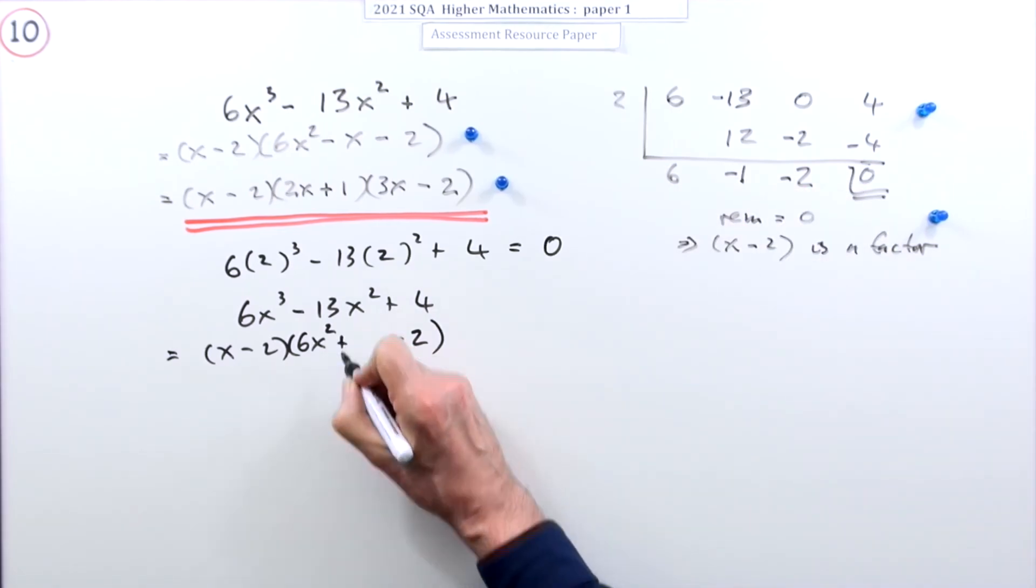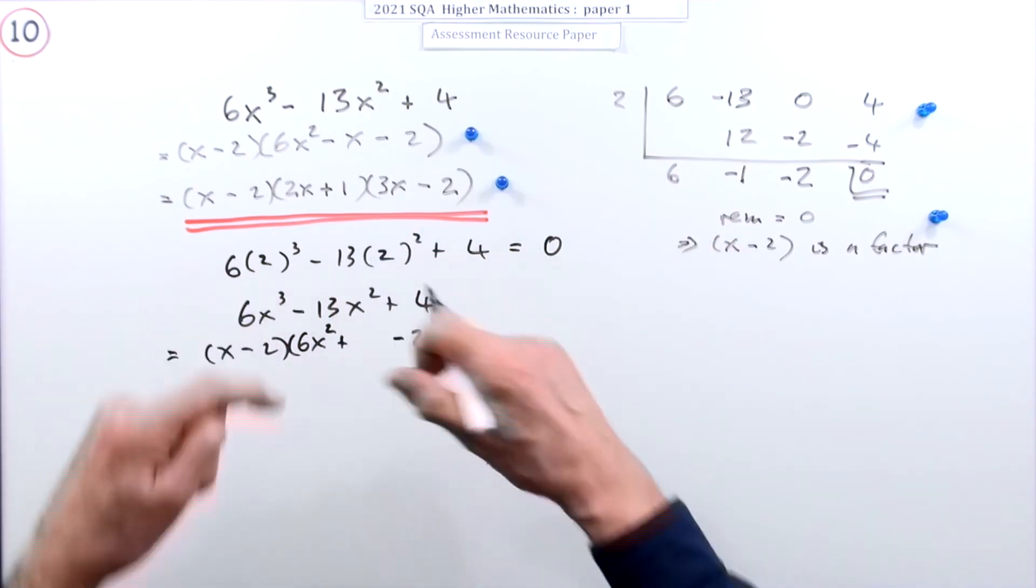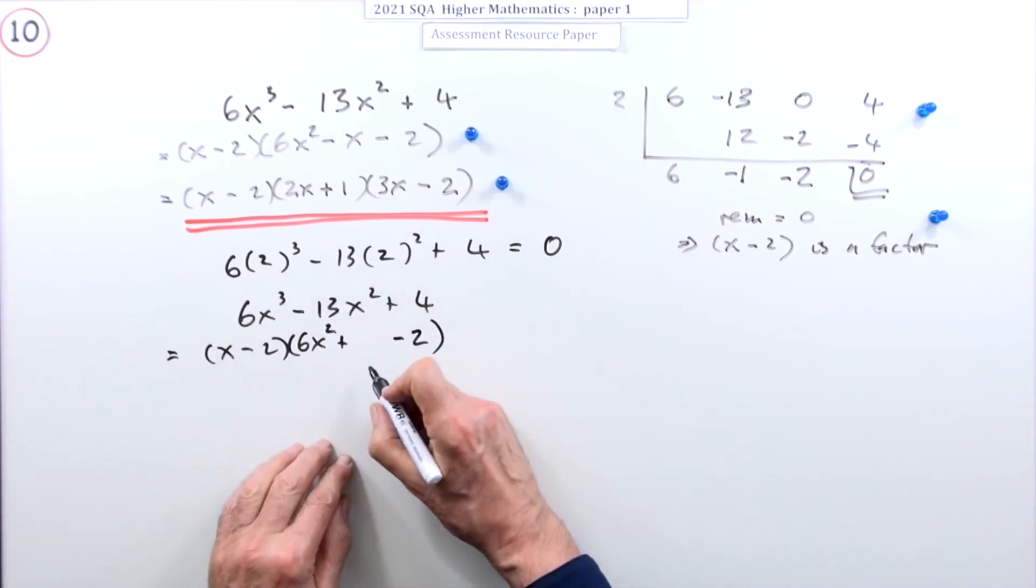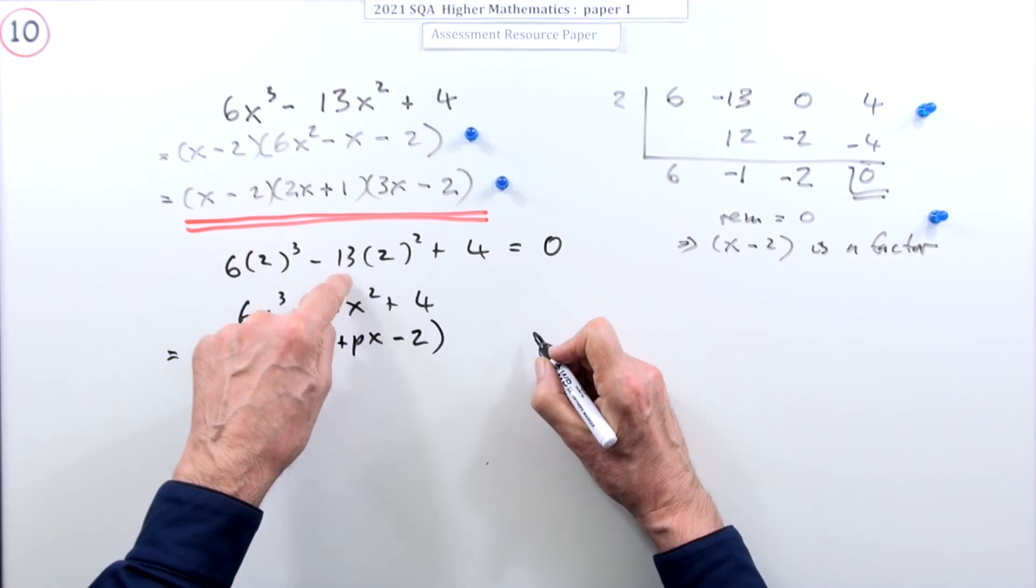So I've got them but I don't know what the middle term is because they're mixed up, various terms joined together to make them. So I don't know that straight away. So I'll just say plus something like px.